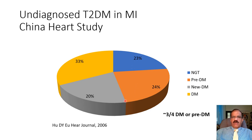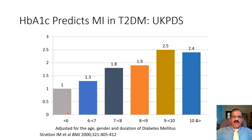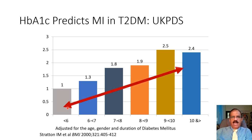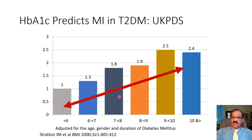We know that as HbA1c increases, the chances of developing a coronary event increase. Data from UKPDS shows that those with higher HbA1c tended to develop coronary events or cerebrovascular accidents more frequently, with almost a linear relationship. There is some evidence that bringing down HbA1c should result in at least a partial reduction in the incidence of coronary events with good glycemic control.